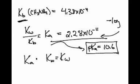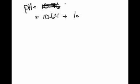So there's a little additional step here if you have a base problem. So now we can use our Henderson-Hasselbalch equation. pH equals 10.64 plus the log of the base over the acid.